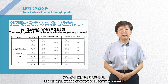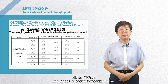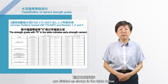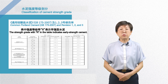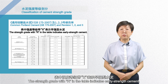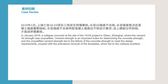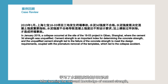According to Common Portland Cement GB175-2007 and amendments 1, 2, and 3, the strength grades of six types of common cement are divided as shown in the table below. The strength grade with R in the table indicates early strength cement.